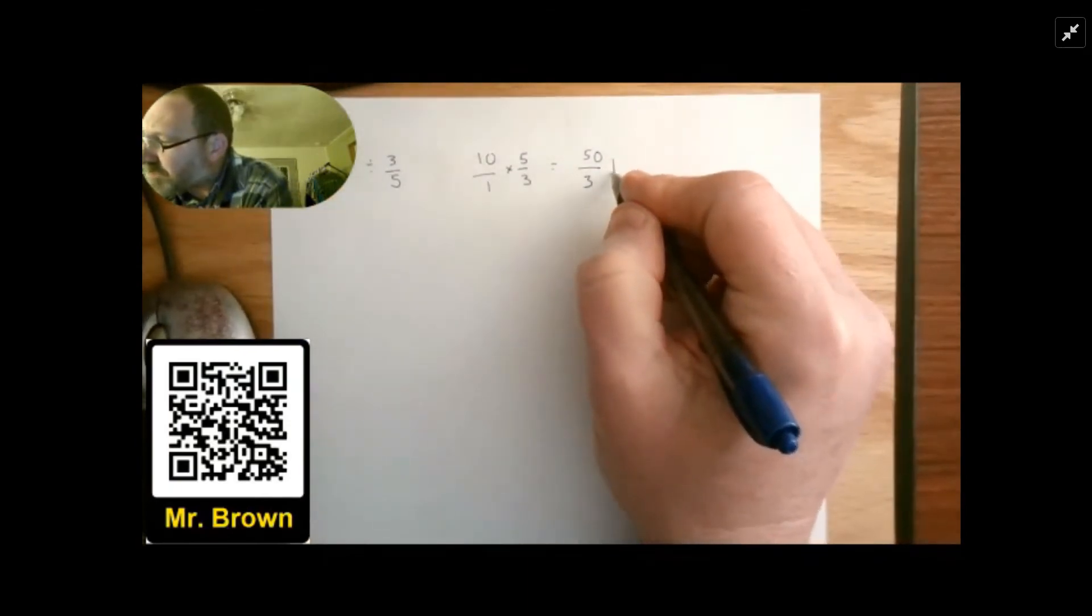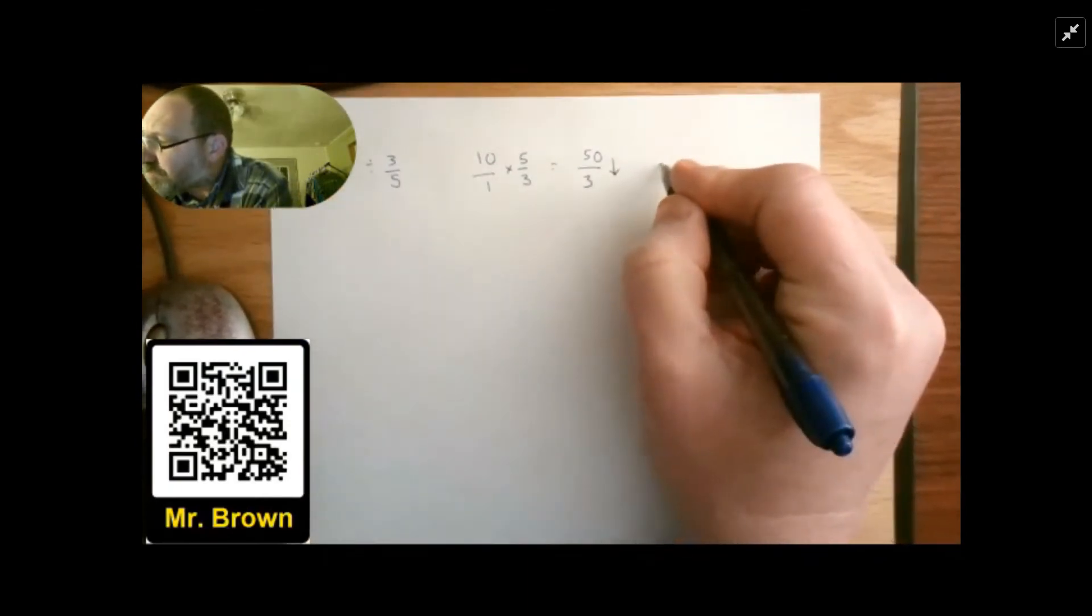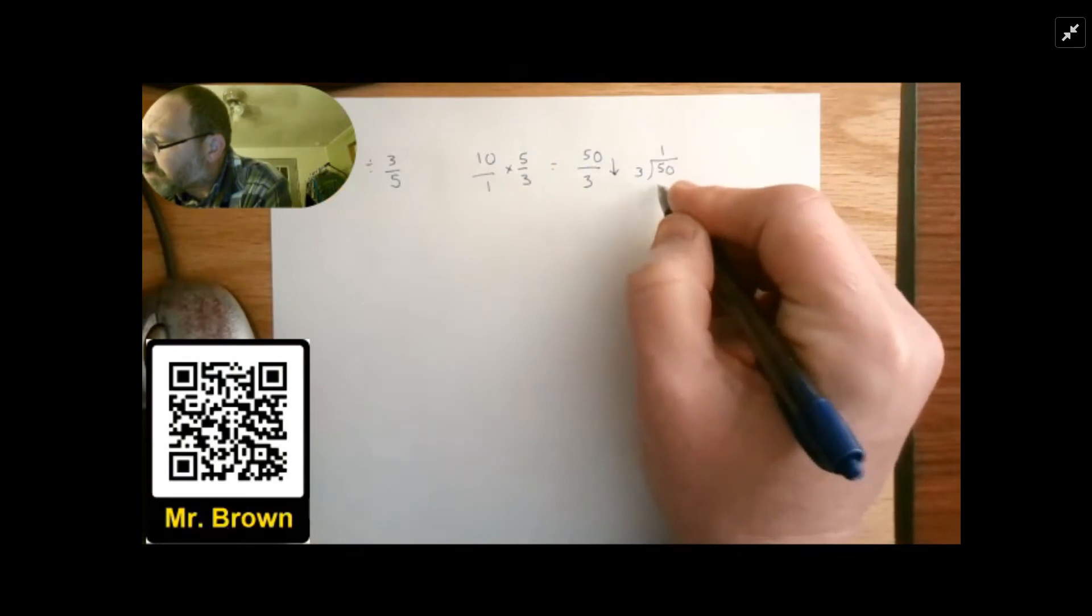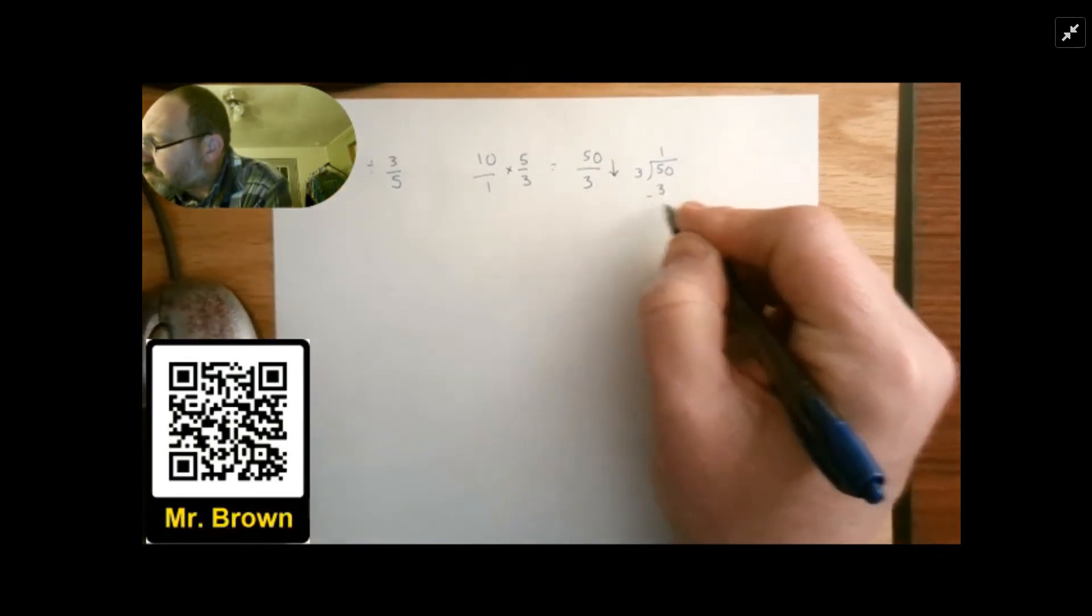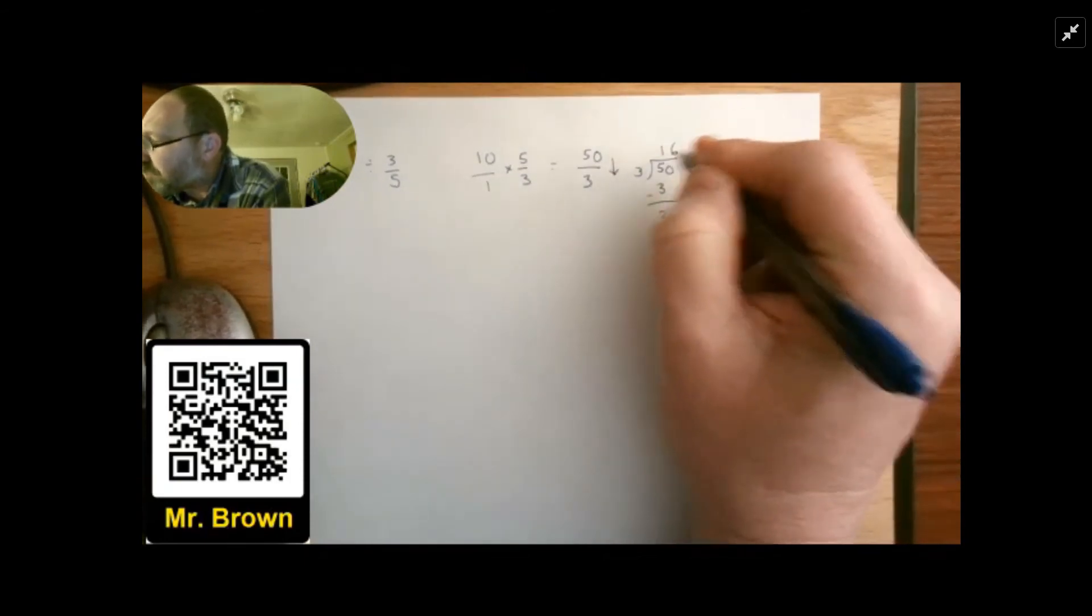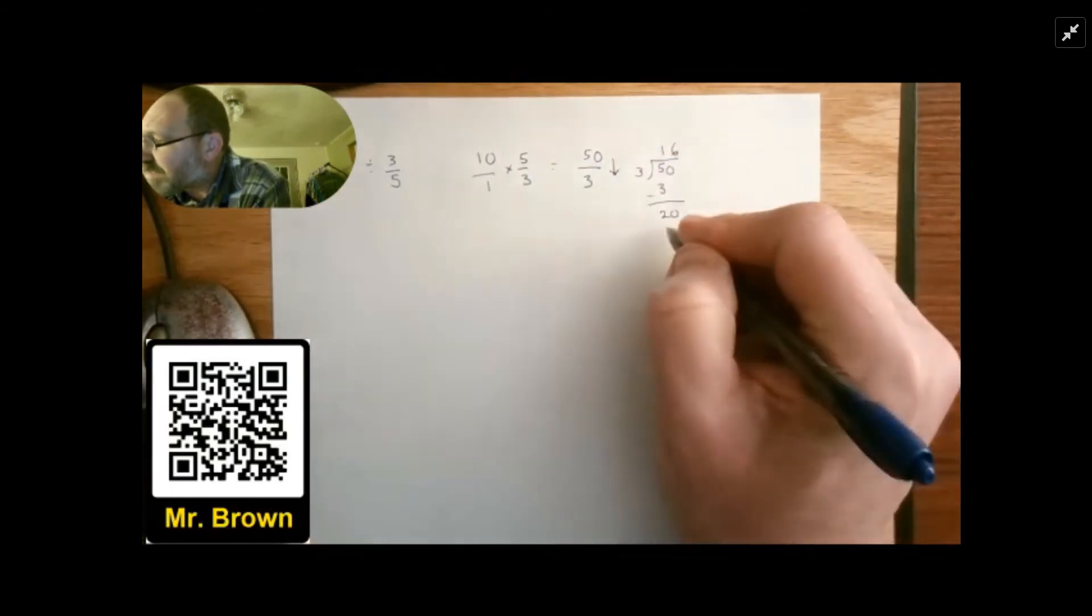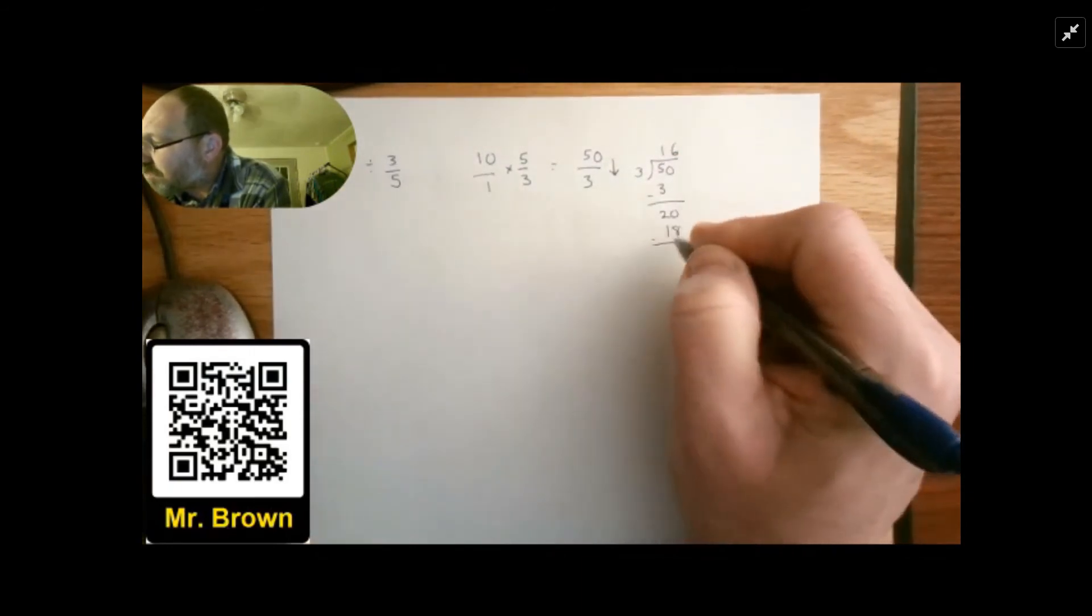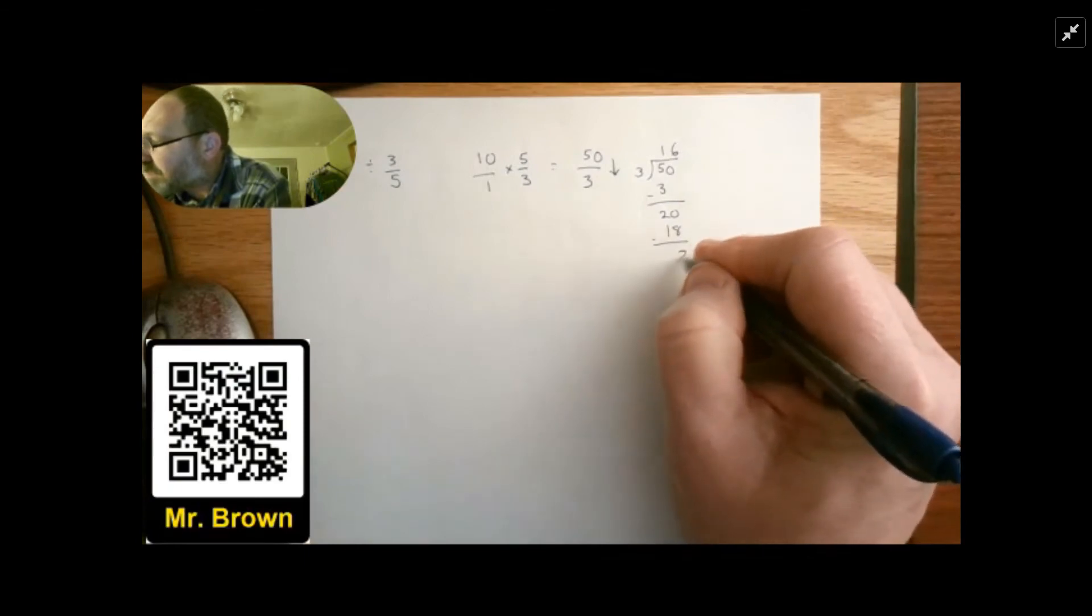I read all fractions as a division problem from top to bottom. So 50 divided by 3. 3 into 5 goes 1. 1 times 3 is 3, subtract out, 5 minus 3 is 2. I'll bring down my 0. 3 into 20 goes 6 times. 6 times 3 is 18, subtract it out, 20 minus 18 is 2.